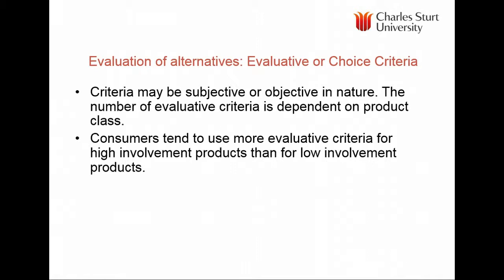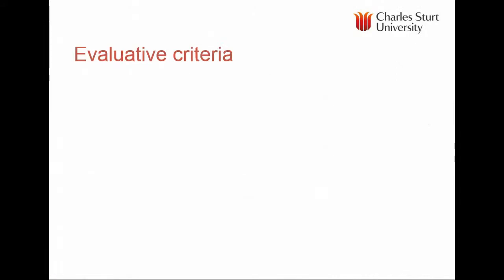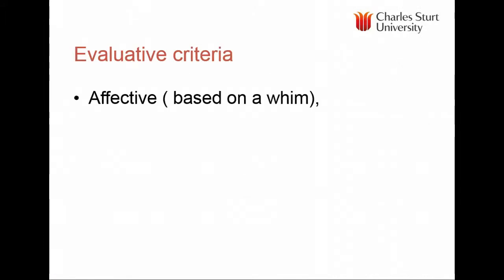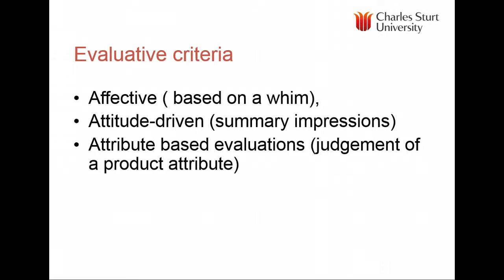If the product or service is highly important to us, we use more evaluative criteria, but even for high-involvement products, the number is typically six or fewer. For example, economy could include fuel economy, cost of repairs, and even reliability. Evaluative criteria can be based on a whim — you just like the product — a cognitive attitude approach, a summary impression such as 'I like Japanese cars' or 'German cars are well designed', attribute evaluations such as safety, or a combination of all three.